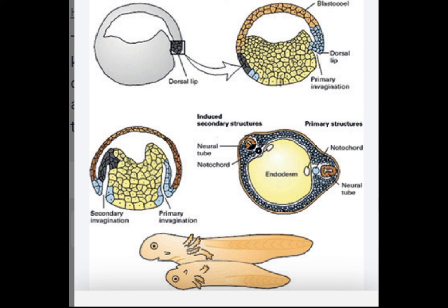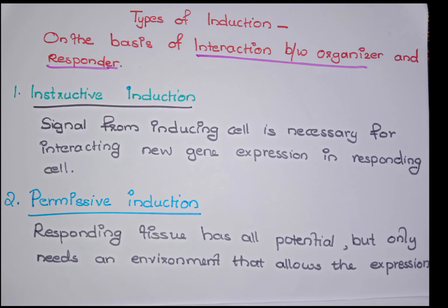The types of inductions on the basis of interaction between organizer and responder are: first, instructive induction — where the signal from the inducing cell is necessary for initiating new gene expression in a responding cell; and second, permissive induction.